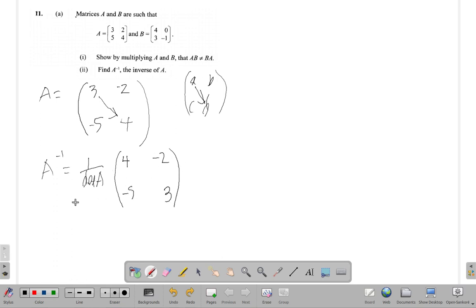But what is the determinant of A? It is ad minus bc, so it's going to be this minus this to give you the determinant of A. So A inverse is going to be one divided by three by four, that's twelve.